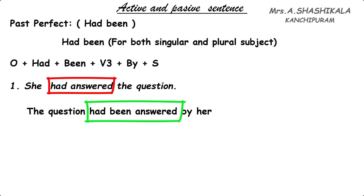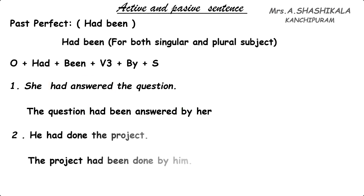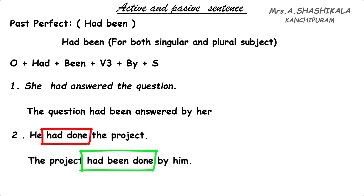See the second example: 'She had done the project.' The passive form is: 'The project had been done by her.'